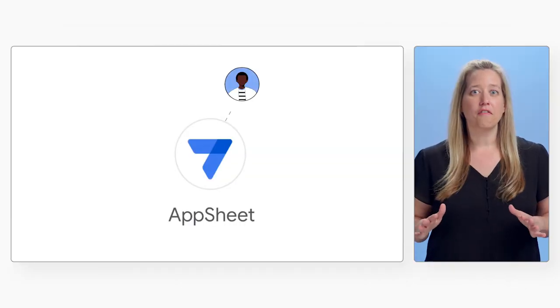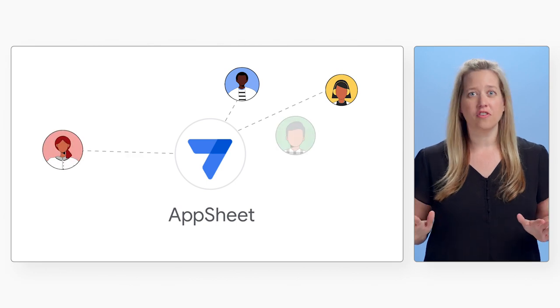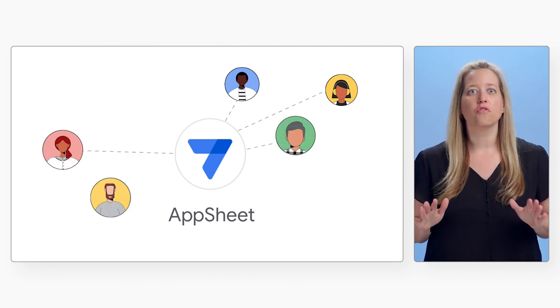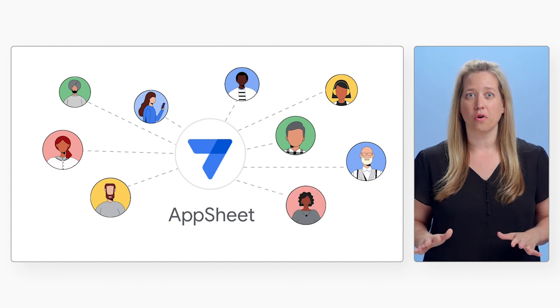In this video, we'll show you how AppSheet, Google's no-code app building platform, is using Generative AI to power new features that bring app building to the world. AppSheet is a platform that enables anyone, not just developers, to rapidly create data-driven apps for Google Workspace without code.